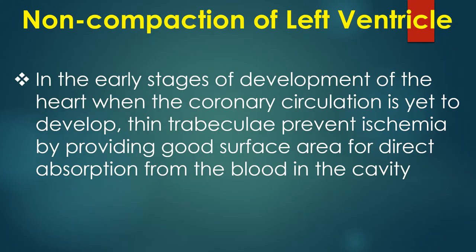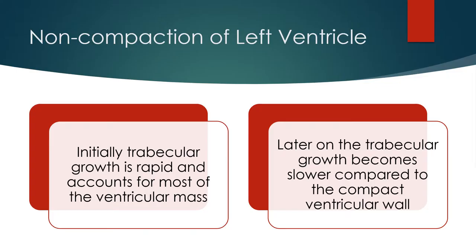In the early stages of development of the heart, when the coronary circulation is yet to develop, thin trabeculae prevent ischemia by providing good surface area for direct absorption from the blood in the cavity. Initially, trabecular growth is rapid and accounts for most of the ventricular mass. Later on, trabecular growth becomes slower compared to the compact ventricular wall.